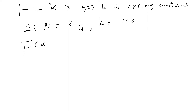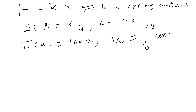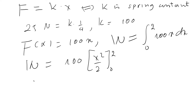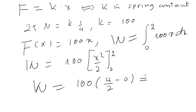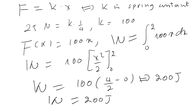The work done is equal to the integral from 0 to 2 of 100x dx. Evaluating: work equals 100 times x squared over 2, from 0 to 2, which gives 100 times (4/2 − 0), equal to 200 joules. So the work done is 200 joules. This is the answer for sub-question (a).